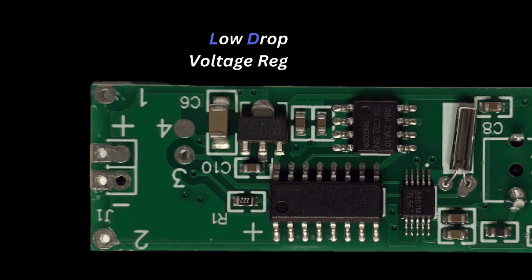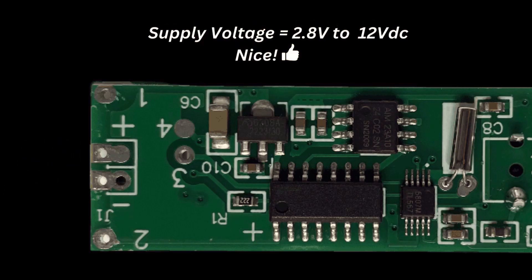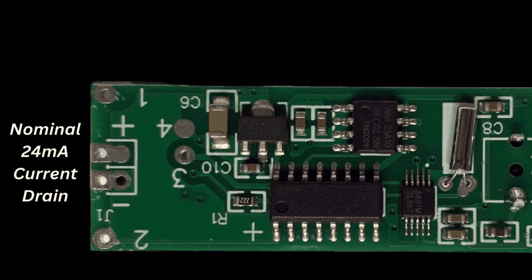Now this is a low dropout regulator. And basically it operates by continuously varying its internal resistance with respect to the change in load resistance. This dropout voltage is the minimum voltage dropped across it for proper regulation. And as its name implies this is very low for this particular regulator. Now the supply to this little board is between 2.8 and 12 volts. So you've got a wide voltage tolerance here.